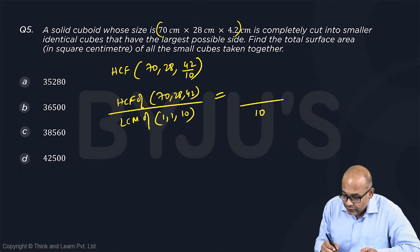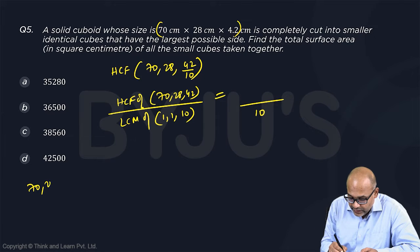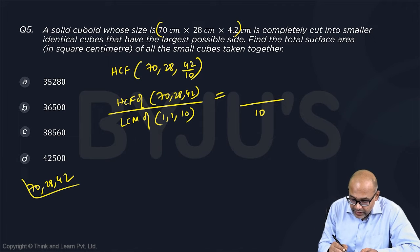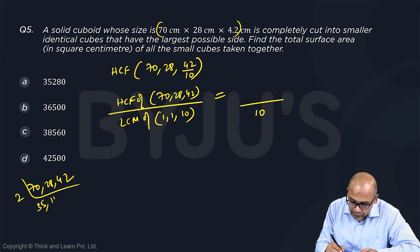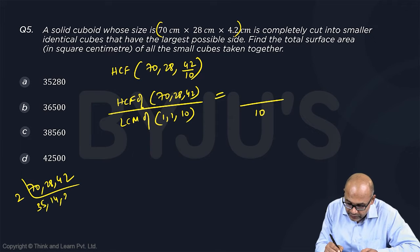Now what is HCF of numerators? So just take 70, 28, 42. Take 4, 4 goes, no 4 doesn't go, 2. 2 goes 35 times, 2 goes 14 times, 2 goes 21 times.